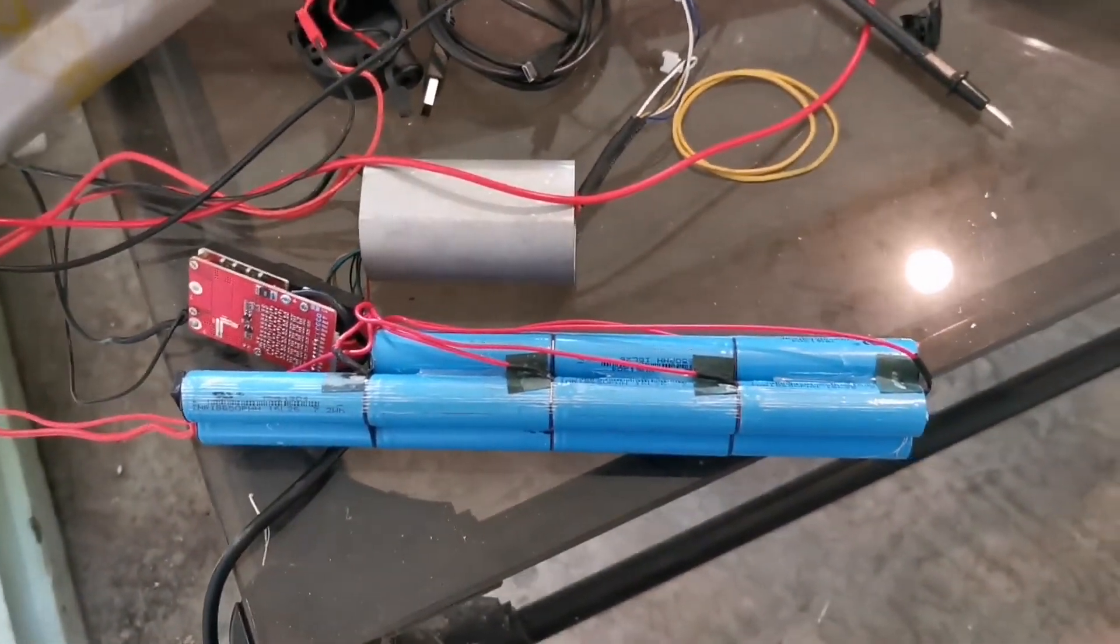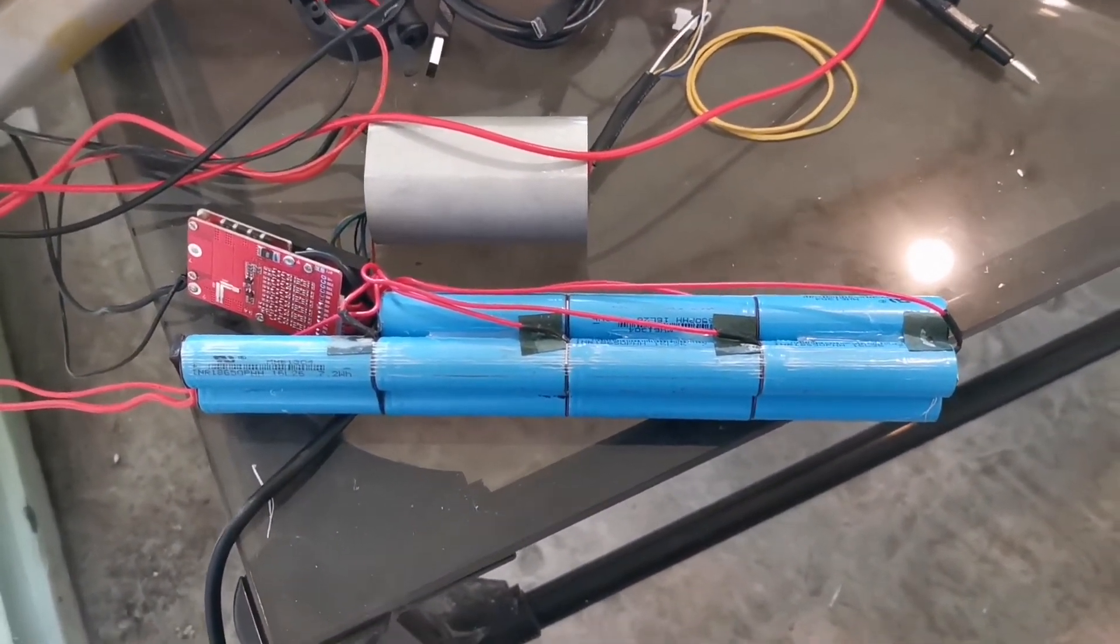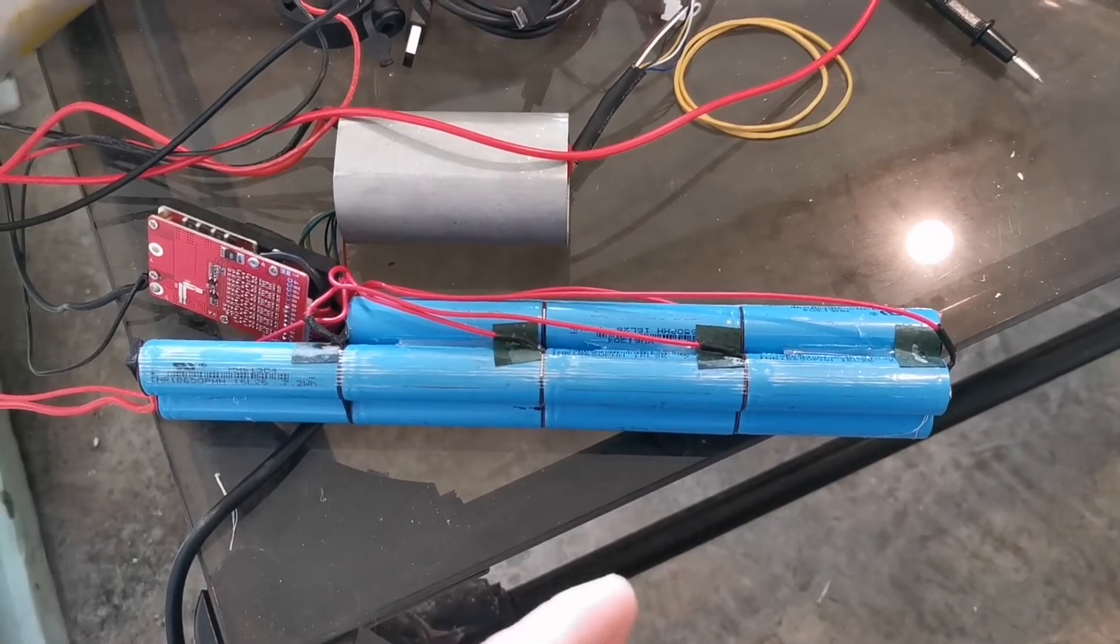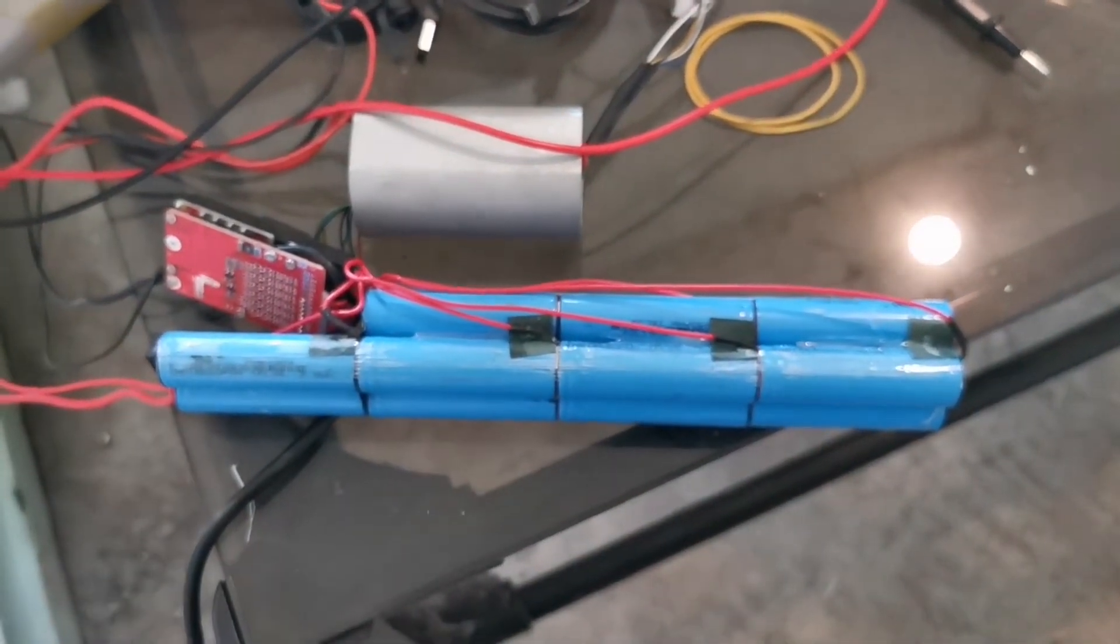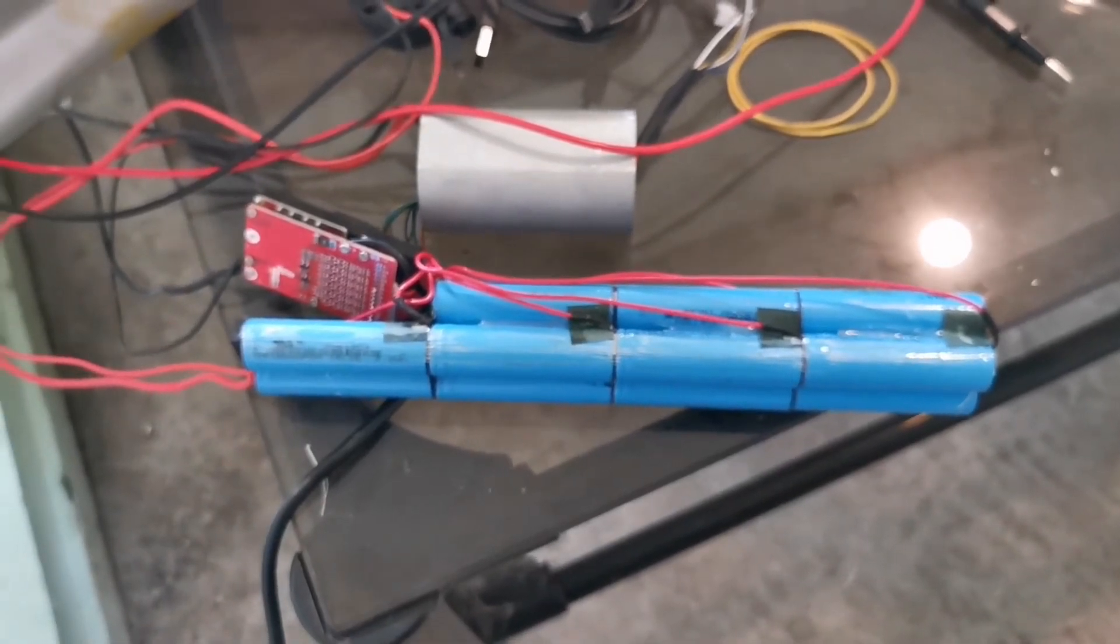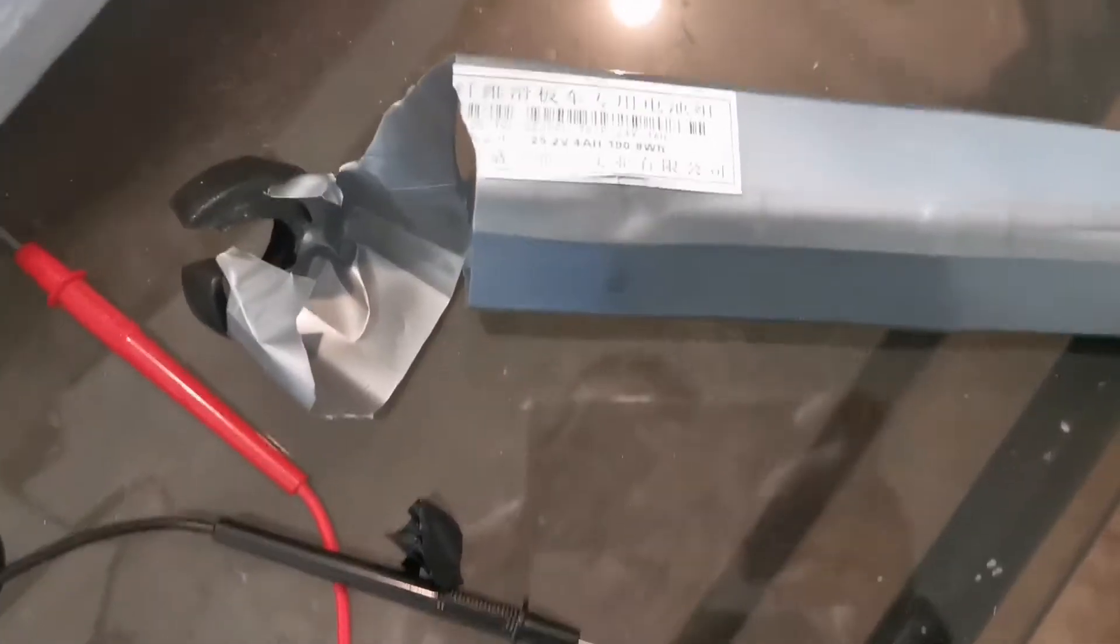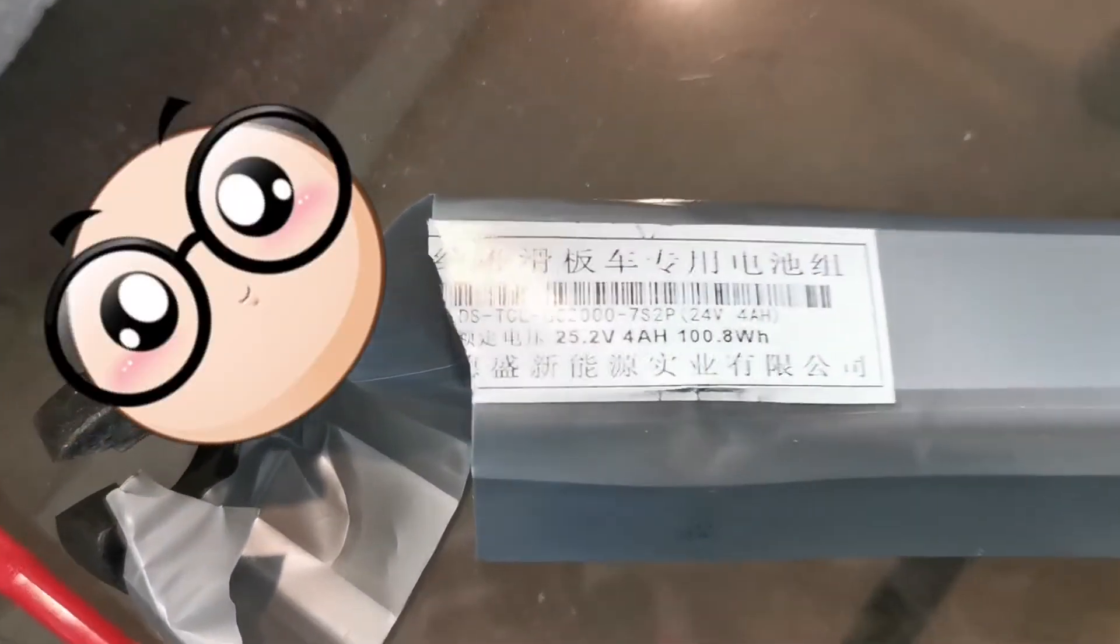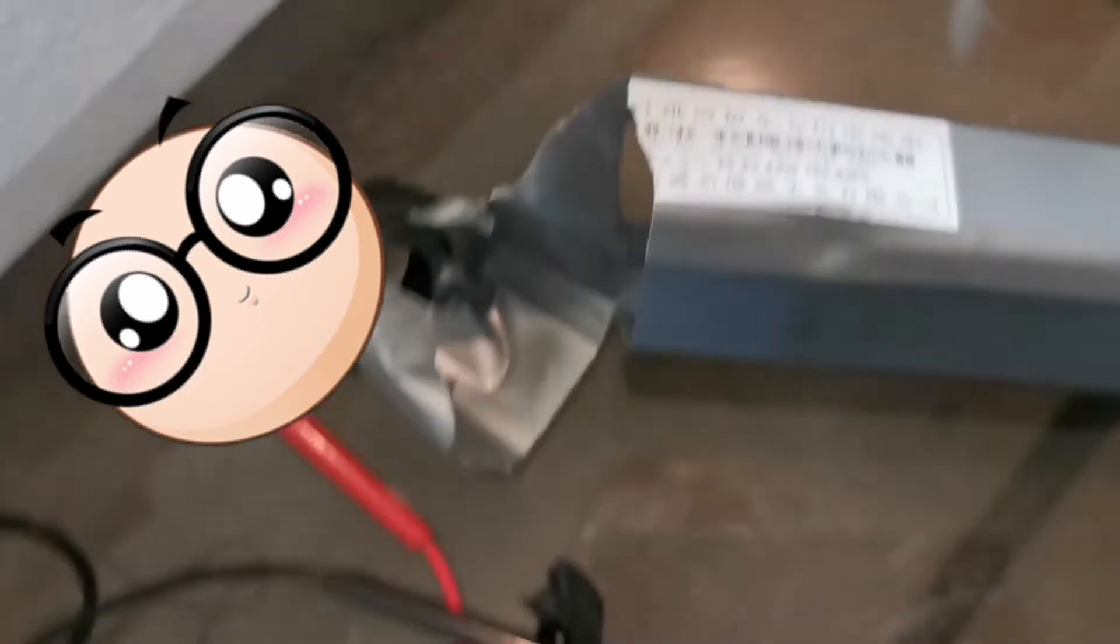That means it has 7 packs in series and 2 batteries make 1 pack. And now I'm gonna show you the problem. Here you can see that we have 25.2 volts.